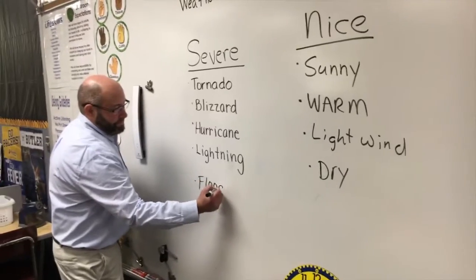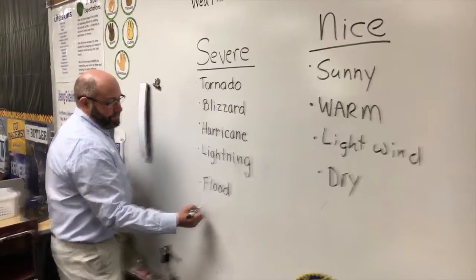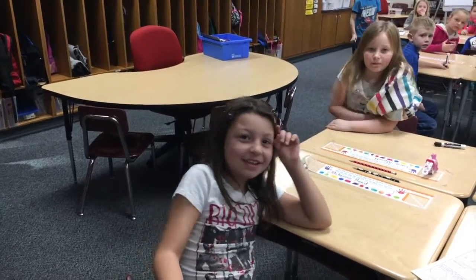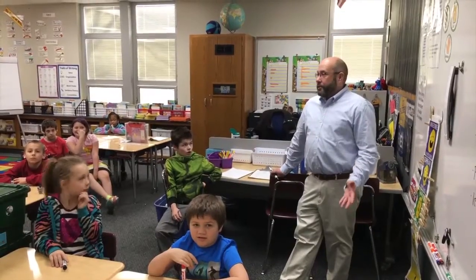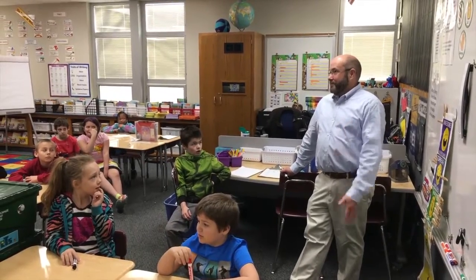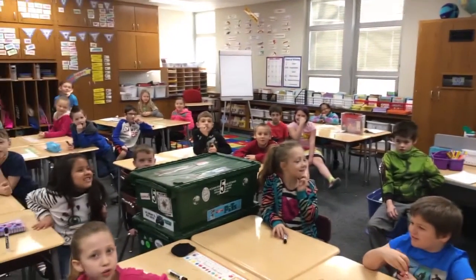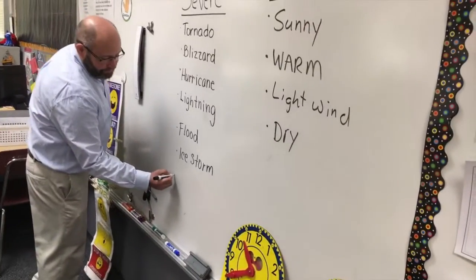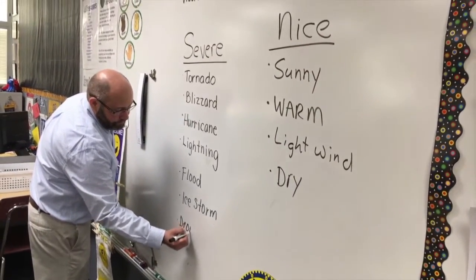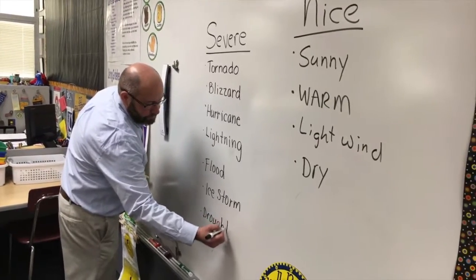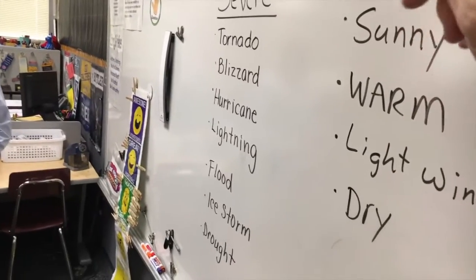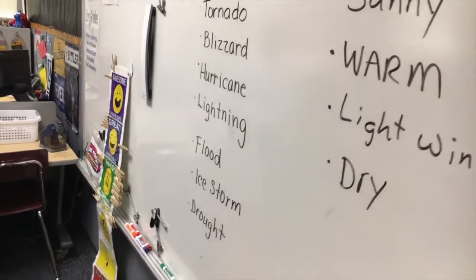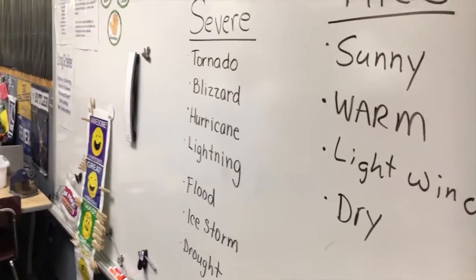What happens if there's so much rain there's a flood? Flood is severe weather — never go in a flood. An ice storm can be very severe because it breaks down the branches and the power lines. And there's one more: when it doesn't rain at all, a drought. So let's add drought to our list. Later there's a lesson about what you should do when it's a tornado, blizzard, hurricane, lightning, flood, ice storm, or drought.